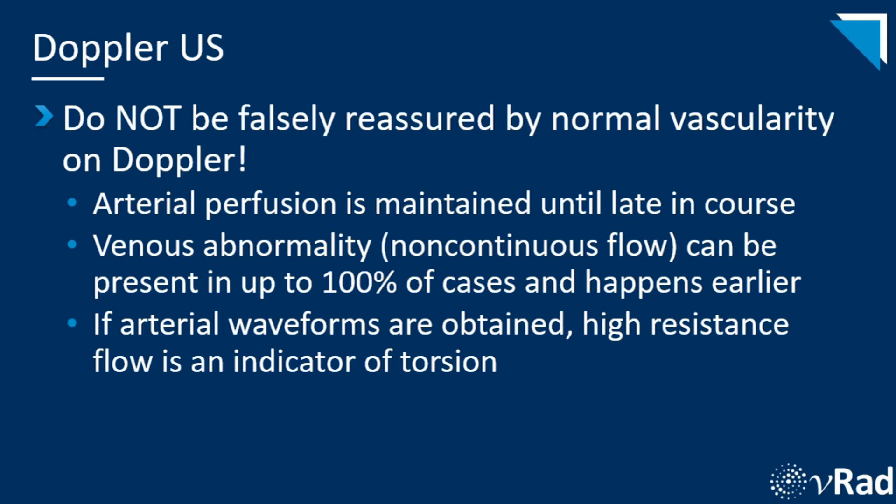A quick word on Doppler ultrasound: do not be falsely reassured by normal vascularity on Doppler. Arterial perfusion is maintained until late in the disease course. Venous abnormality, such as non-continuous flow on spectral Doppler, can be present in up to 100% of cases and happens earlier, making it easier to confirm the diagnosis. If arterial waveforms are obtained, high resistance flow is usually an indicator of torsion.